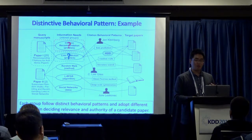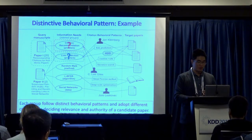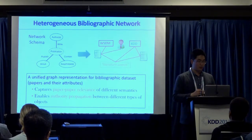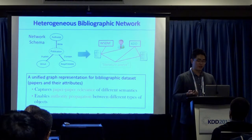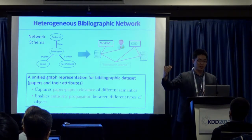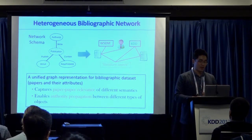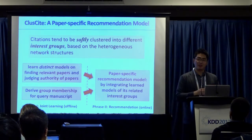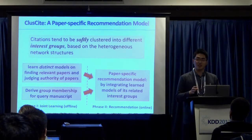The key questions are: how can our computational system derive these latent interest groups, and how do we know the behavioral pattern of each group? We start by transforming bibliography datasets as a heterogeneous network where phrases, venues, authors, and papers are all nodes interconnected together.